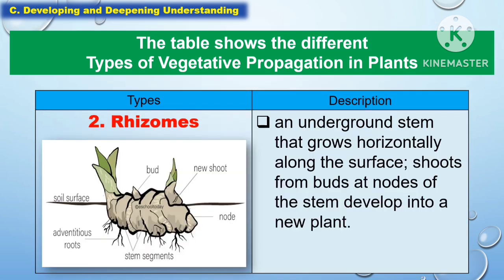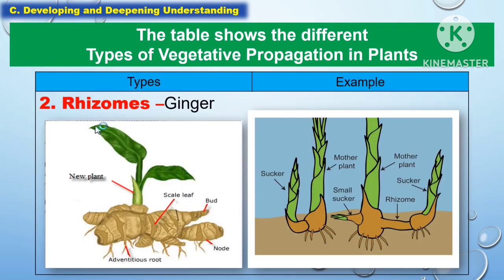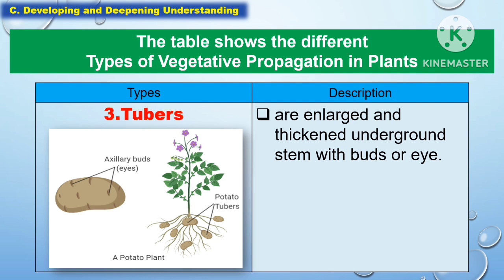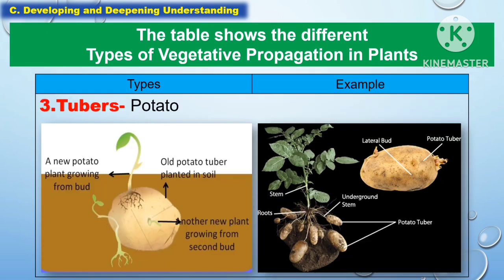Another type of vegetative propagation in plants is rhizomes — an underground stem that grows horizontally along the surface. Shoots from buds at nodes of the stem develop into a new plant. An example is ginger. Another type is tubers, which are enlarged and thickened underground stems with buds or eyes. An example of a tuber is the potato.